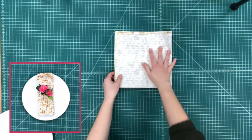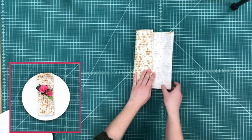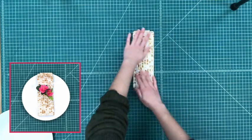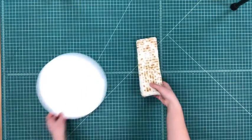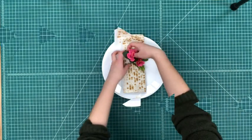Then flip it over and fold it into thirds. Once you flip it back over, you have the final look. Just put it on your plate, stick a flower in it and you're ready to go.